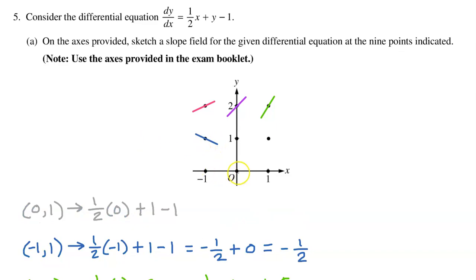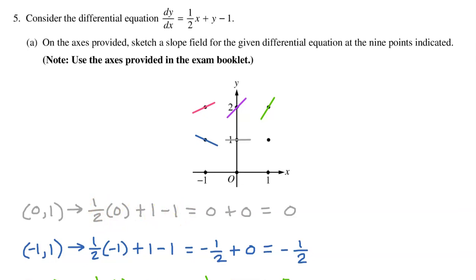At the point (0, 1), we have one-half times zero plus 1 minus 1. That's zero, so draw your slope as a horizontal line.